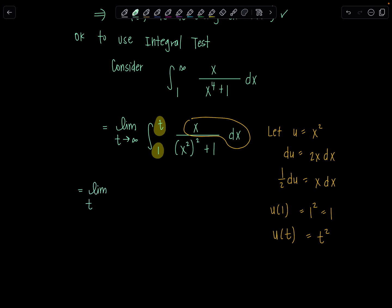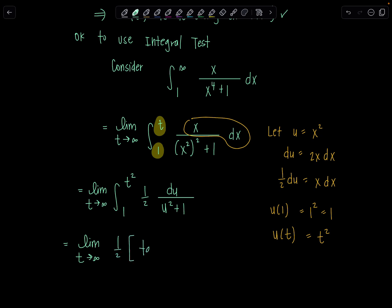We've got the limit as t goes to infinity, integral from 1 to t squared. The x dx becomes one-half du, so we put the one-half out front. And x squared squared becomes u squared, giving us one-half times the integral of 1 over u squared plus 1 du. The antiderivative of 1 over u squared plus 1 is tan inverse of u. So this is one-half times tan inverse of u, evaluated from 1 to t squared.